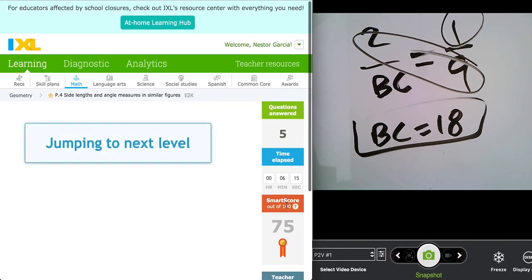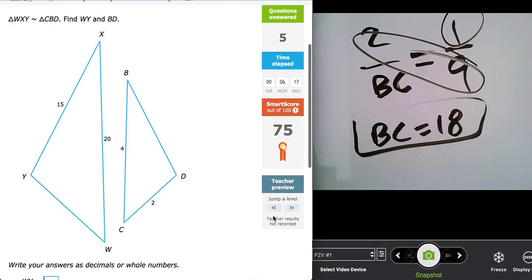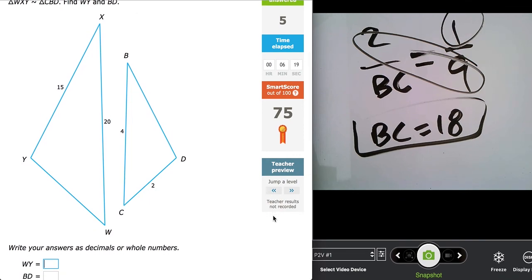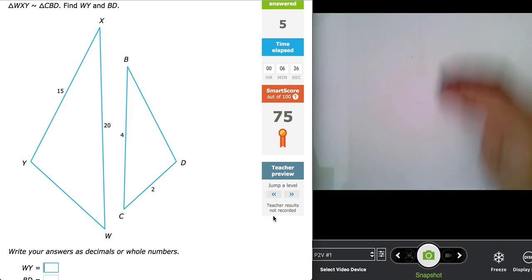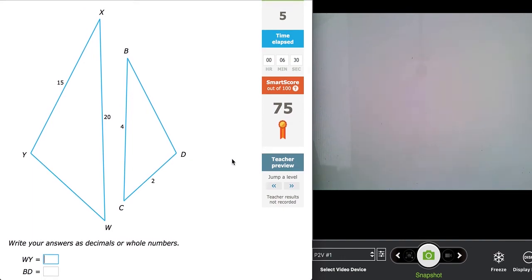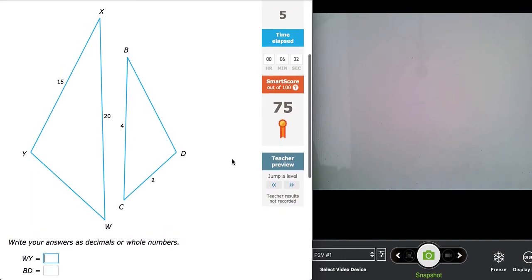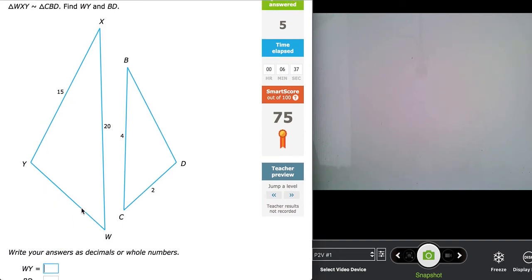Okay. These are similar. We're going to skip forward, try to find a problem that is a little more challenging. Okay. This problem's a little more challenging in that you have to find two measurements, not just one for the same problem. So now let's create this proportion here. We're looking for WY.